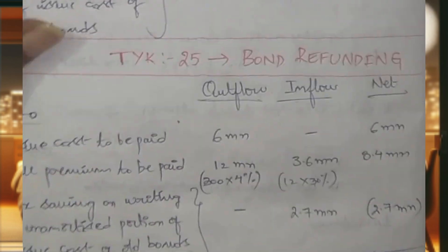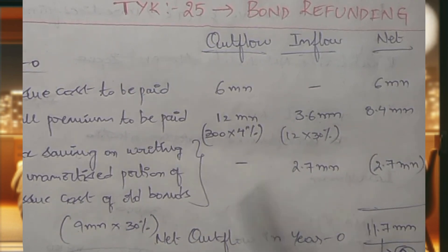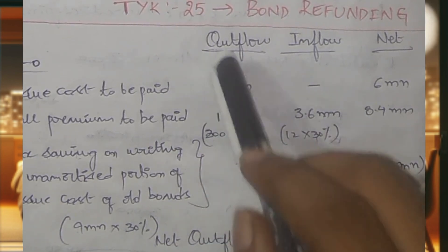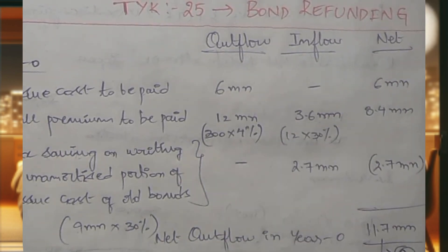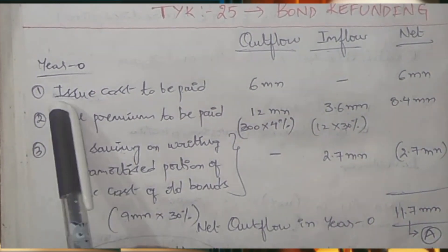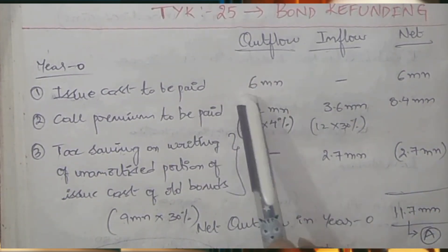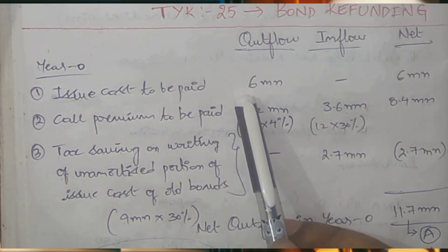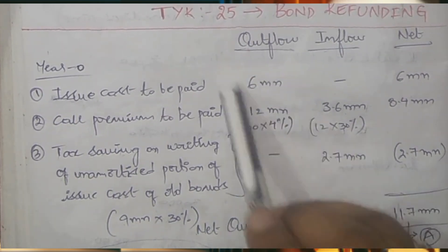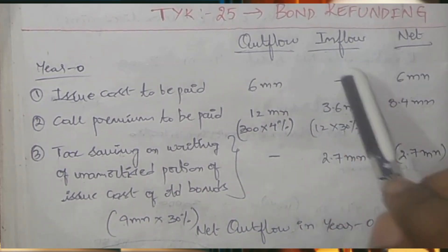Let's go to the solution. First of all, we have to calculate net outflow in year 0. We are calling it net outflow because there will be some tax savings, which will be considered as inflows. So in year 0, there will be some outflows and inflows in the form of tax savings. In year 0, the company has to pay 6 million in the form of issue cost for issuing new bonds — that will be an outflow. The issue cost will be amortized over the period of life of the new bond, which is 6 years. So there will be no tax savings with respect to this issue cost in year 0.